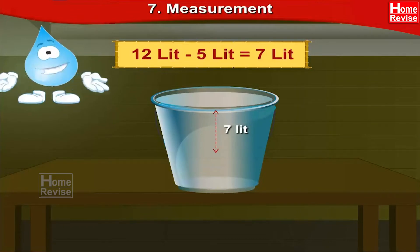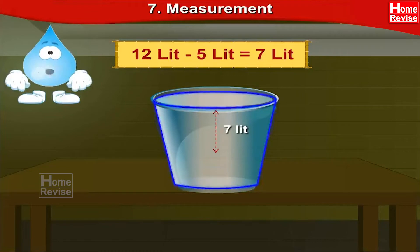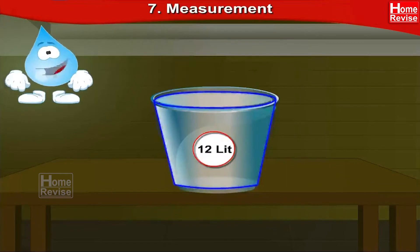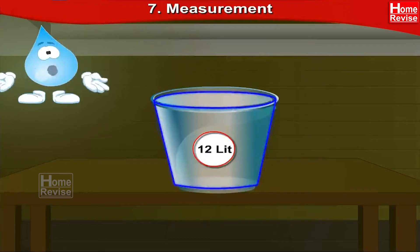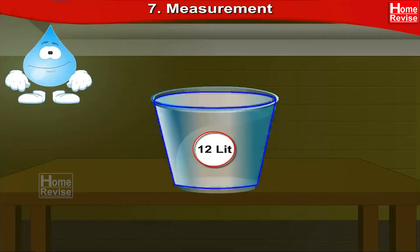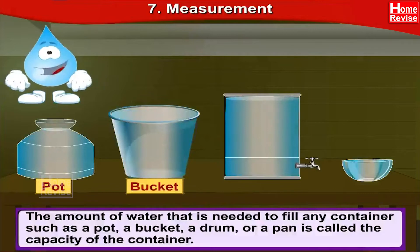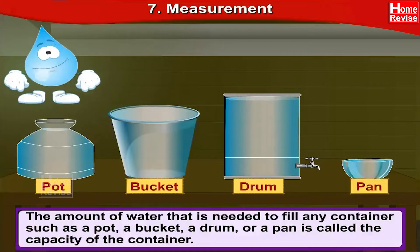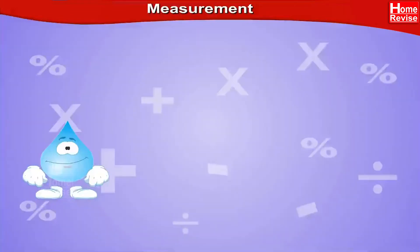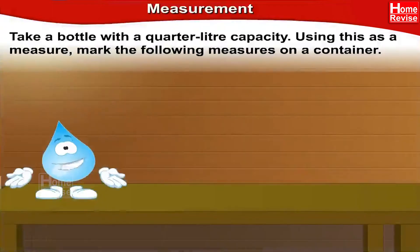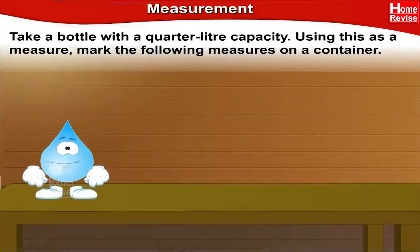This bucket can hold 12 liters of water — that means the capacity of this bucket is 12 liters. The amount of water needed to fill any container such as a pot, a bucket, a drum, or a pan is called the capacity of the container. Take a bottle with a quarter-liter capacity and use this as a measure to mark the following measures on a container.